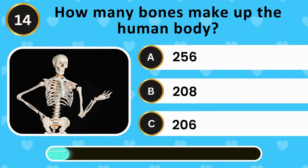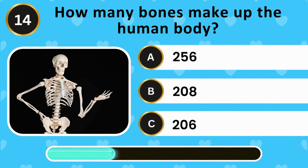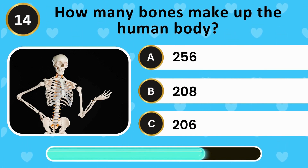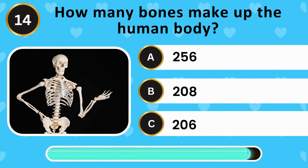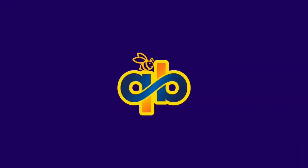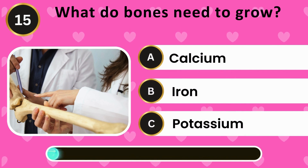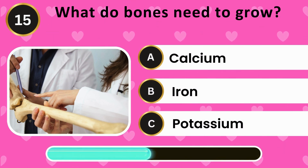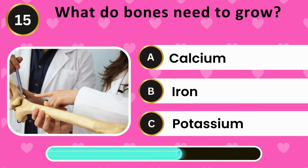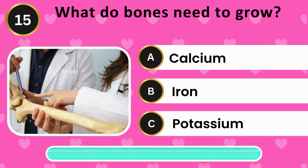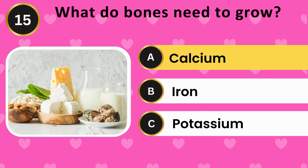How many bones make up the human body? Two hundred and fifty-six, two hundred and eight, two hundred and six. The answer is two hundred and six. What do bones need to grow? Calcium, iron, potassium. The answer is calcium.